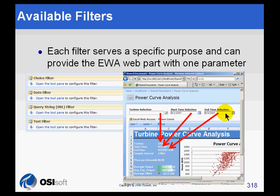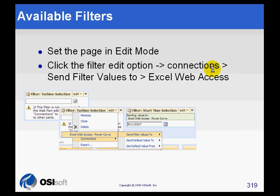When you create these connections, the different filters can all provide one parameter to the Excel Web Access Web Part. For example, you may have a drop-down that lets you choose among four different turbines, a simple text entry, or an end time text entry. Each one is going to pass a value to a single named parameter — specifically, to a named range in the spreadsheet, similar to what we did before.